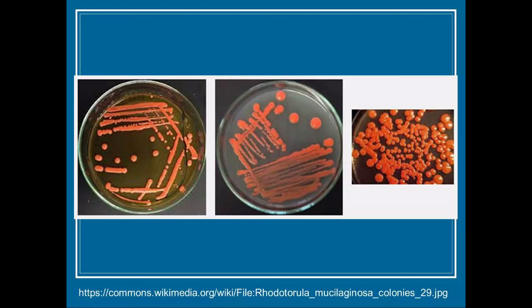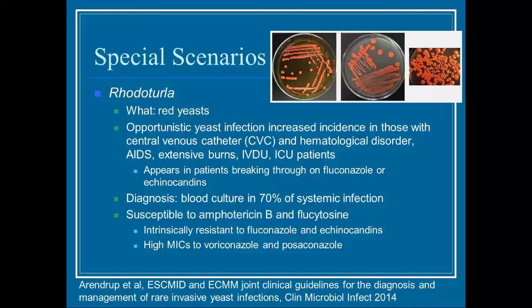Rhodotorula is a red yeast and an opportunistic yeast infection with increased incidence in those with CVCs, hematologic disorders, AIDS, extensive burns, IV drug use, and ICU patients. It appears in patients who are on fluconazole or echinocandins suppressive therapy and breaks through because it is intrinsically resistant to fluconazole and echinocandins. Blood culture will be positive in 70% of systemic infections. It is susceptible to amphotericin B products and flucytosine. Note it also has high MICs to voriconazole and posaconazole, making those less advantageous treatment choices.